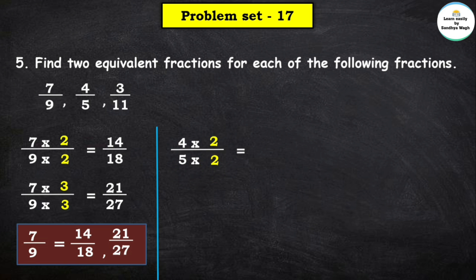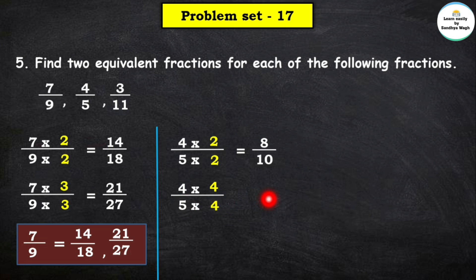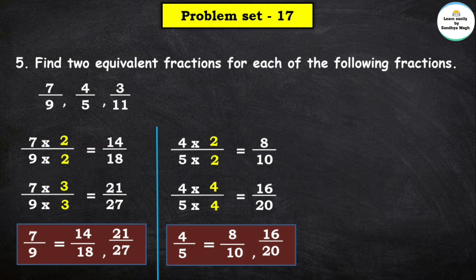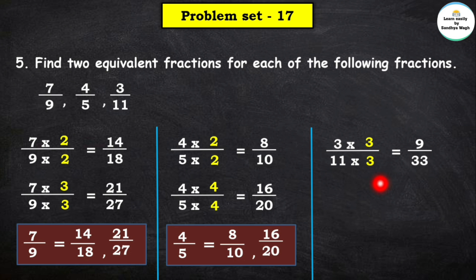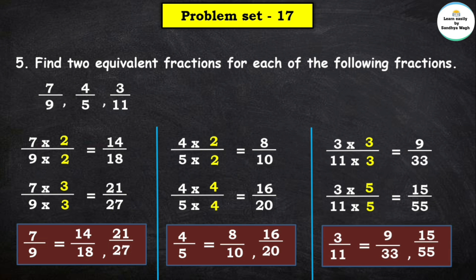For 4 upon 5, multiply by 2: 4 × 2 = 8 and 5 × 2 = 10, giving 8 upon 10. Then multiply by 4: 4 × 4 = 16 and 5 × 4 = 20, giving 16 upon 20. So the two equivalent fractions of 4 upon 5 are 8 upon 10 and 16 upon 20. For 3 upon 11, multiply by 3: 3 × 3 = 9 and 11 × 3 = 33, giving 9 upon 33. Then multiply by 5: 3 × 5 = 15 and 11 × 5 = 55, giving 15 upon 55. So the two equivalent fractions of 3 upon 11 are 9 upon 33 and 15 upon 55.